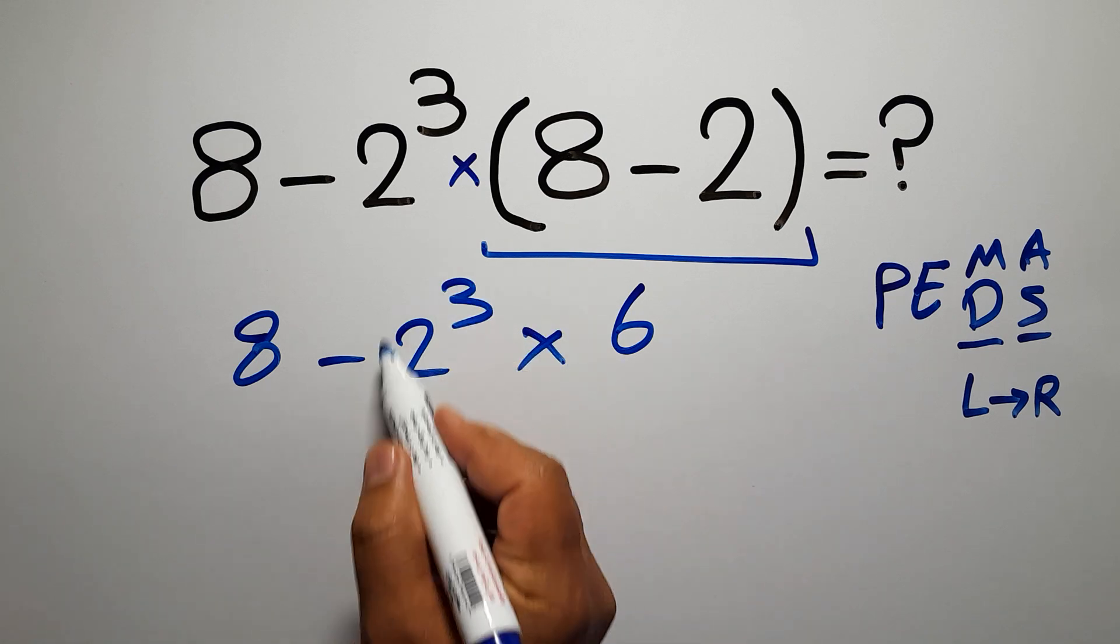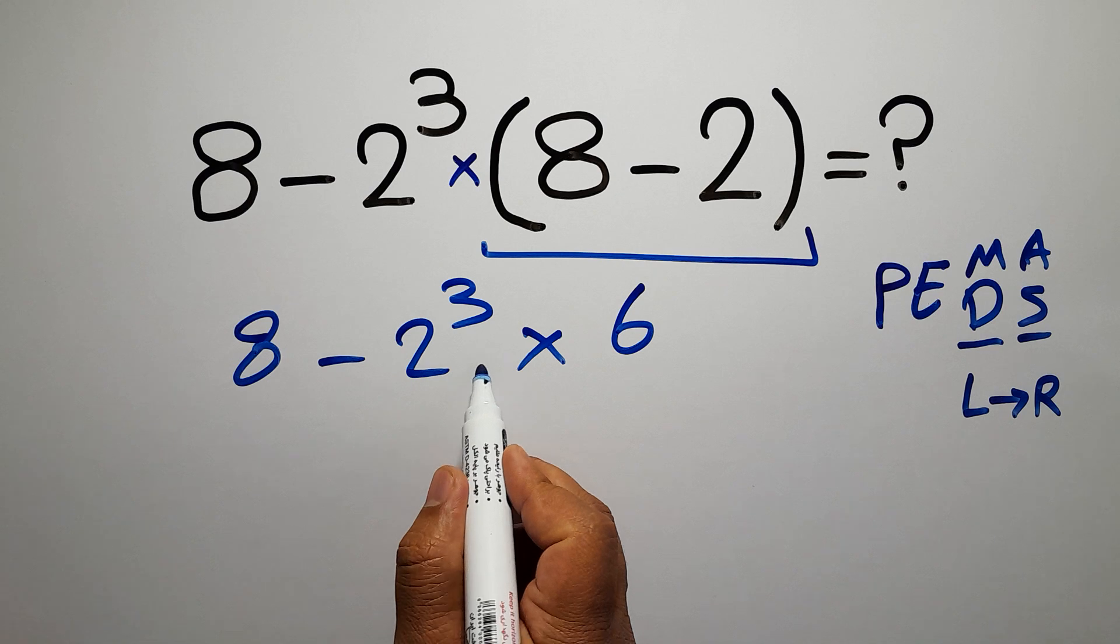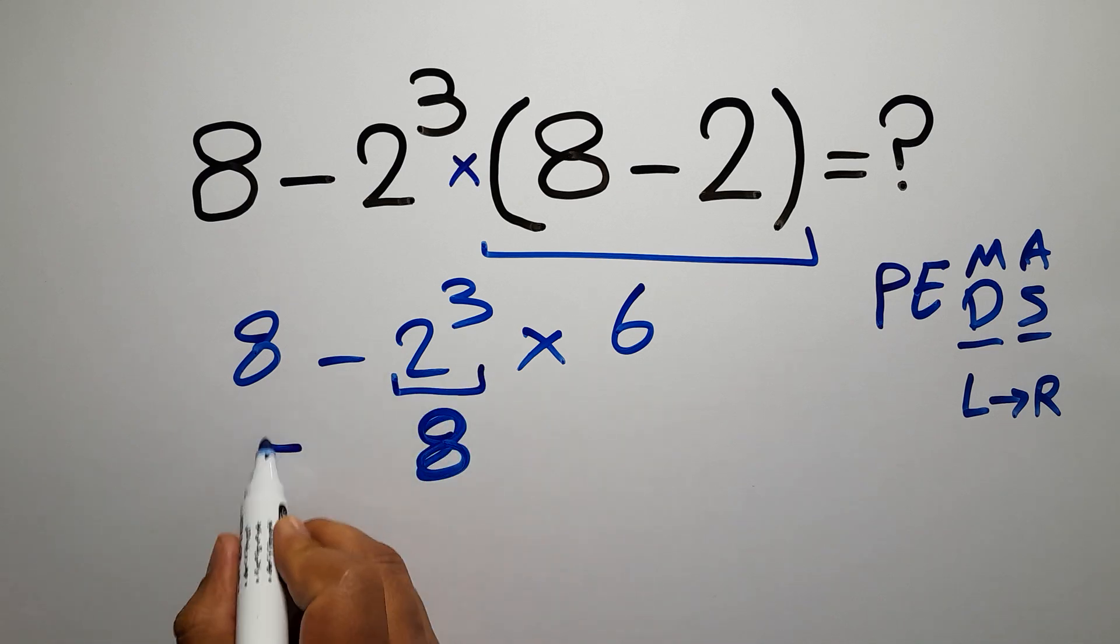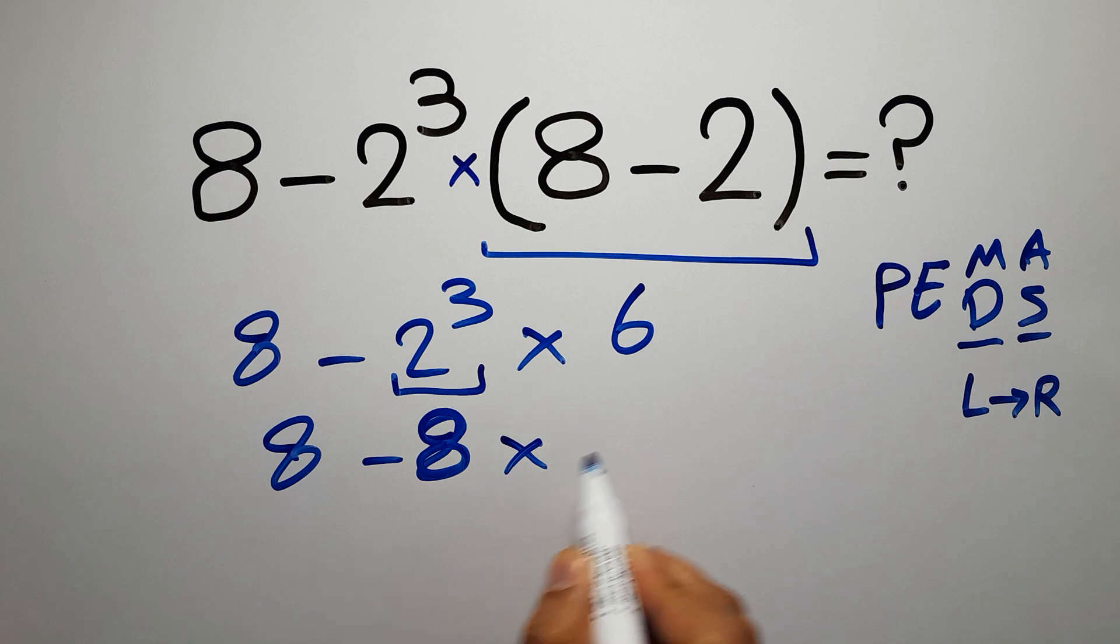Now we have to do this exponent. 2 cubed gives us 8. So we have 8 minus 8 times 6.